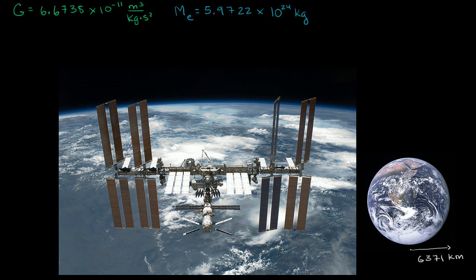Most physics books will tell you that the acceleration due to gravity near the surface of the Earth is 9.81 meters per second squared. And this is an approximation.